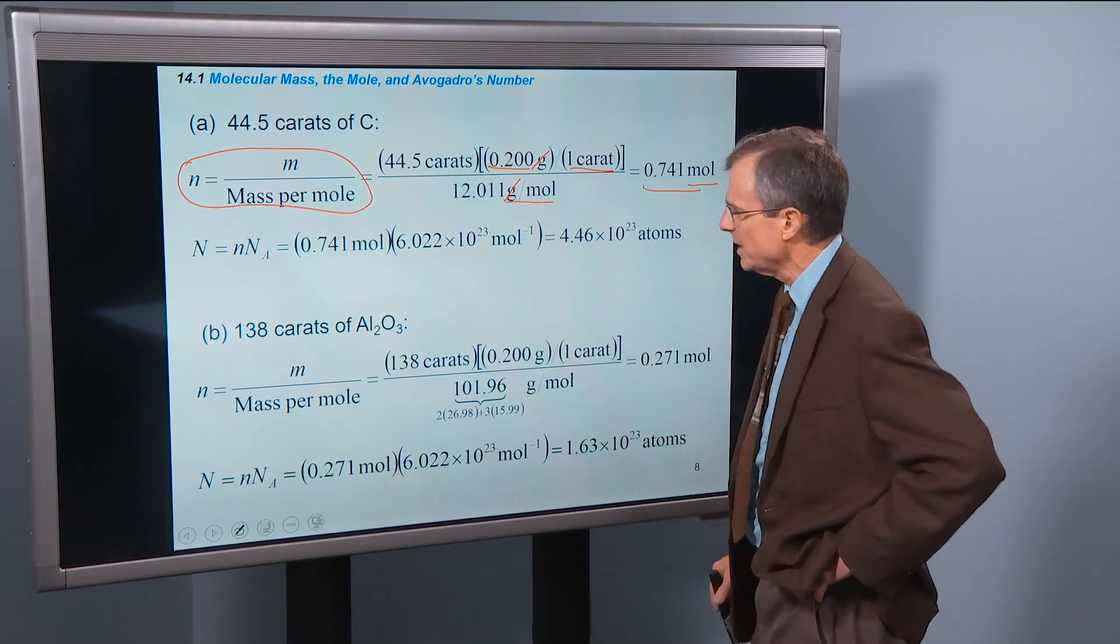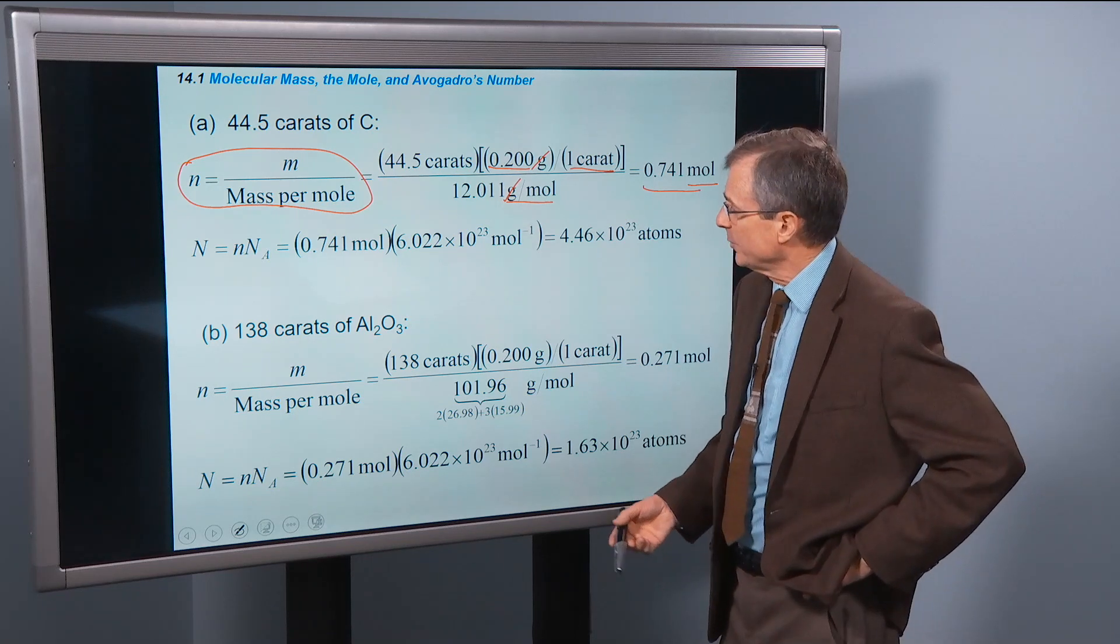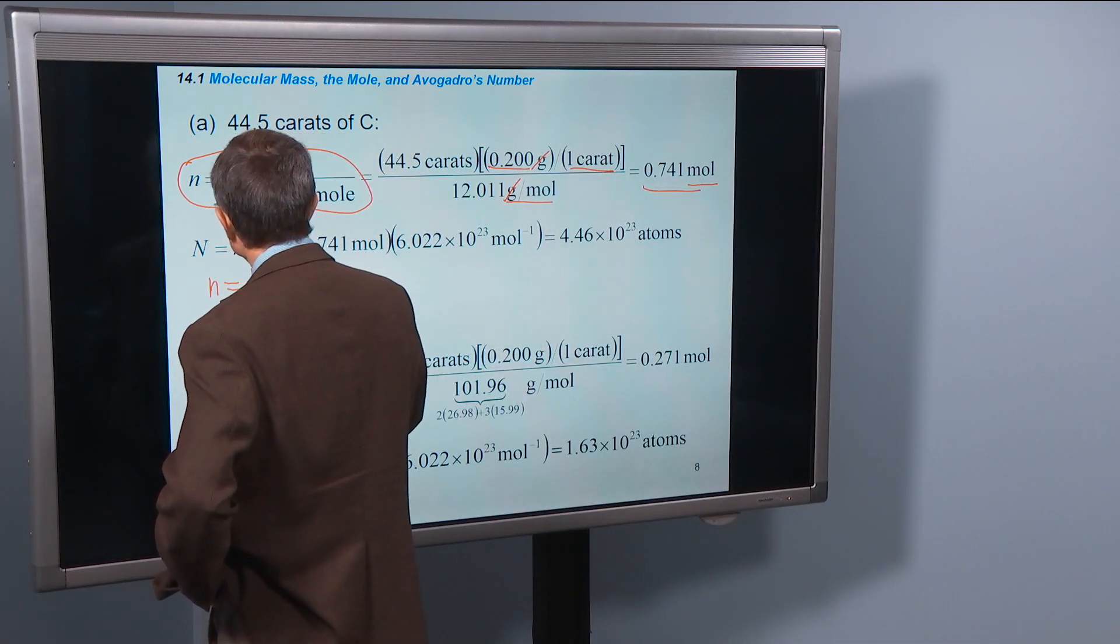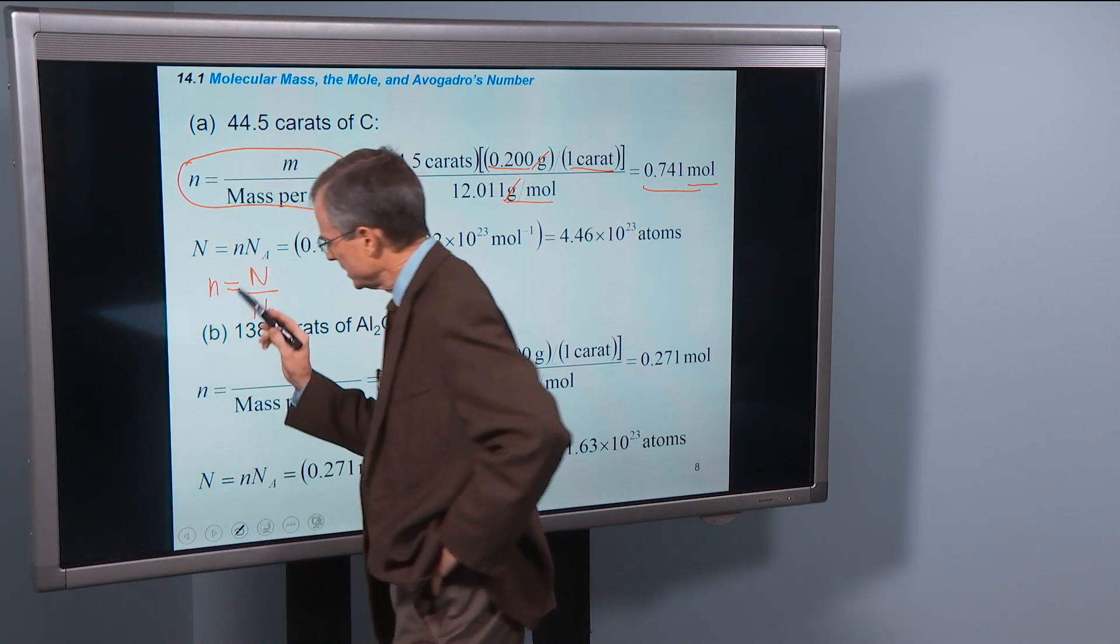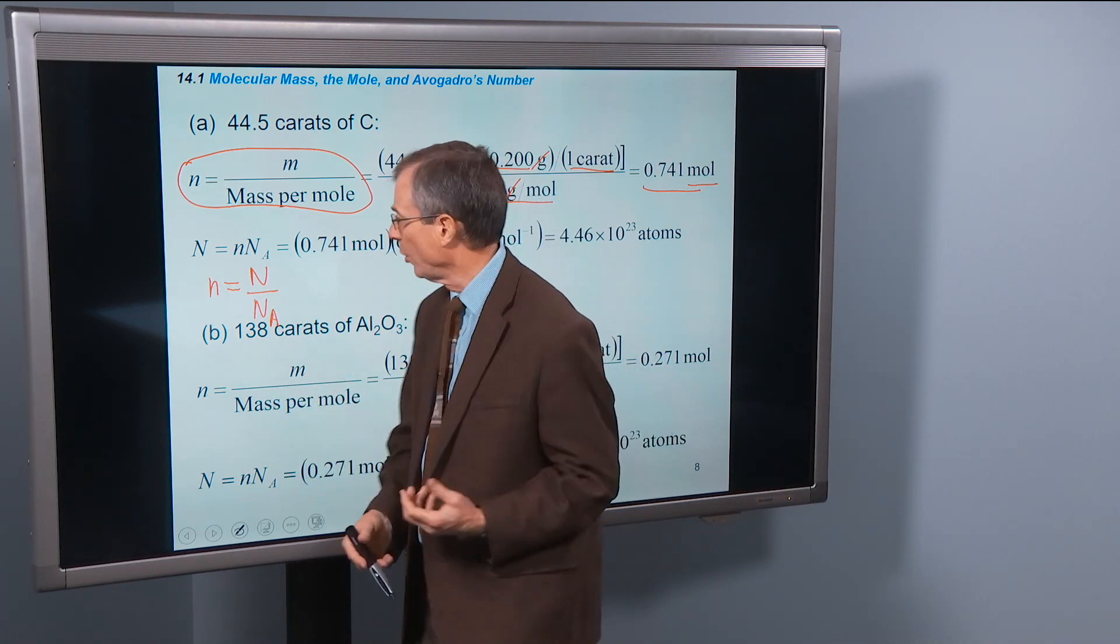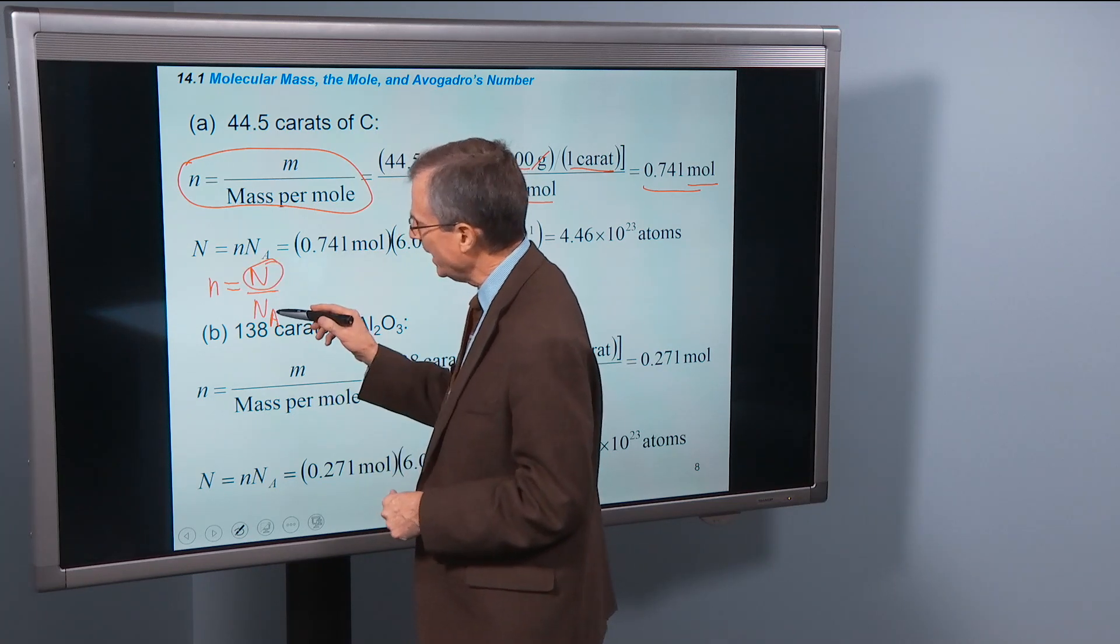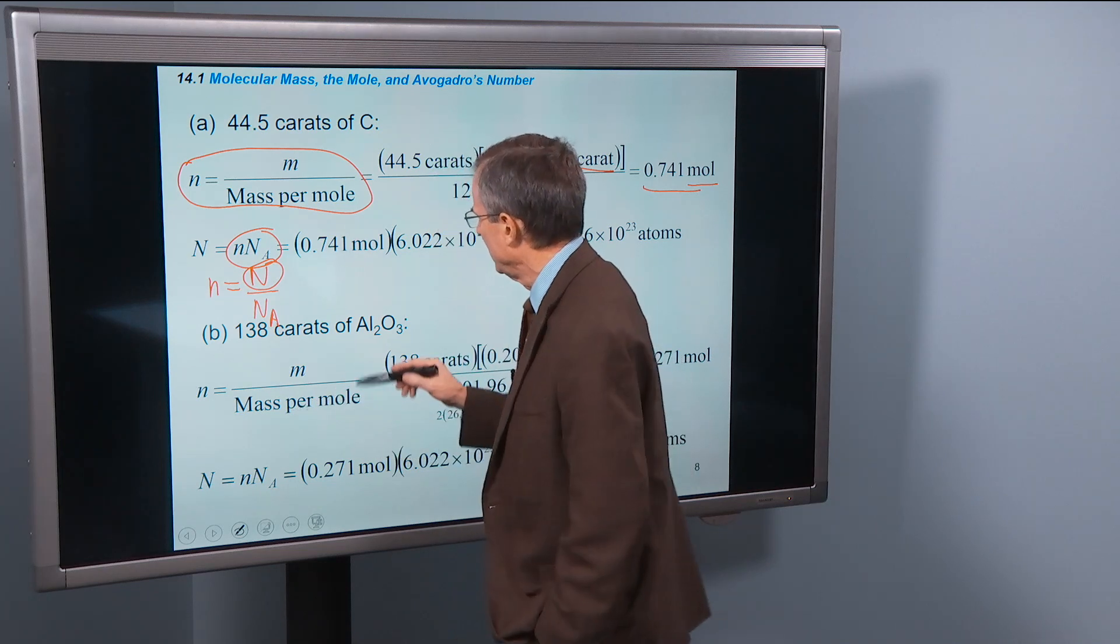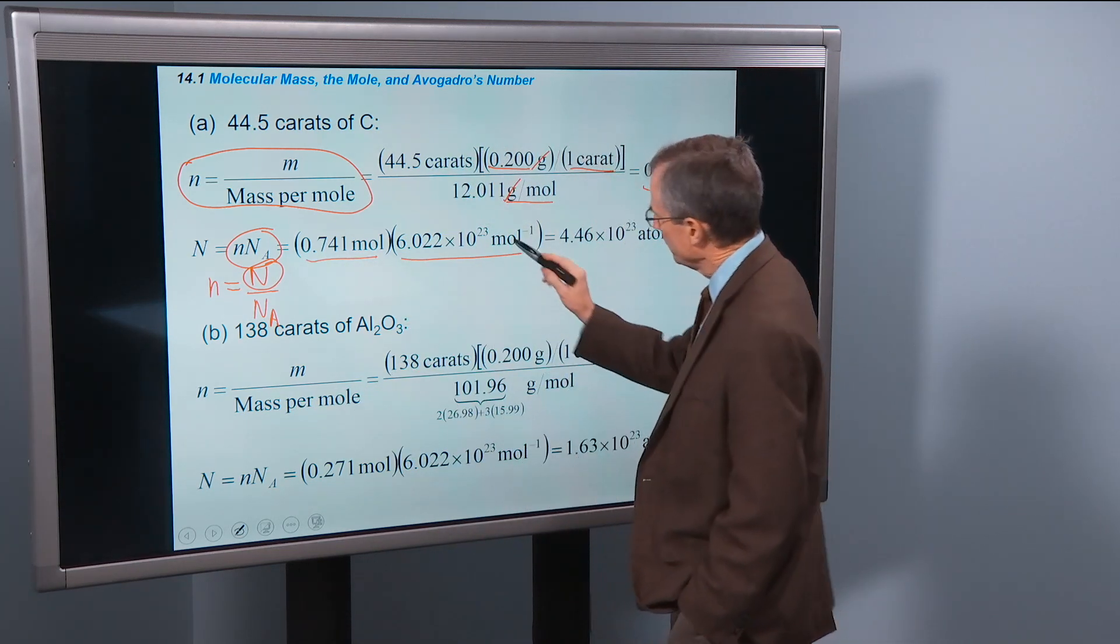But the question actually asks us, how many carbon atoms are in that? For that, we need the relationship that n is N over Avogadro's number. The number of moles is the number of particles divided by Avogadro's number, which is the number of particles per mole. So instead, we solve this equation for N, which is n times N_A, Avogadro's number. Plug in the number of moles, plug in Avogadro's number, particles per mole.